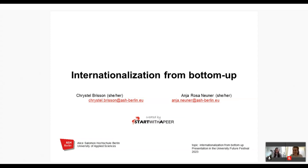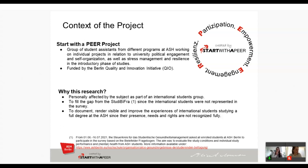We are both working as student assistants in the Start with a Peer project — a peer project in which five students each had the flexibility to conceptualize their own project, as long as it related to university political engagement, self-organization, and stress management and resilience in the introductory phase of studies. This project is funded by the Berlin Quality and Innovation Initiative. Sadly, it looks like the funding was not renewed, but working for this project allowed us to be paid to do this research and the advocacy work that followed.